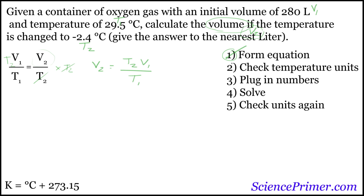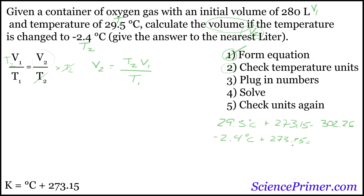Step two: check the temperature units. We're given T1 of 29.5 degrees Celsius and T2 of negative 2.4 degrees Celsius. Both are in degrees Celsius, so we need to add 273.15 to both. T1 becomes 29.5 plus 273.15 equals 302.65 Kelvin, and T2 becomes negative 2.4 plus 273.15 equals 270.75 Kelvin. Now we have the temperatures in the proper units.